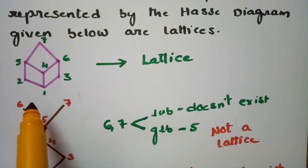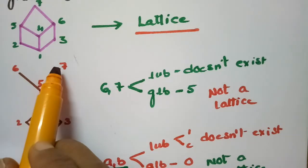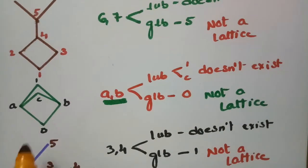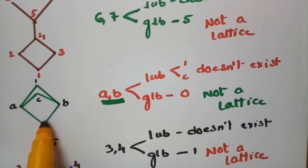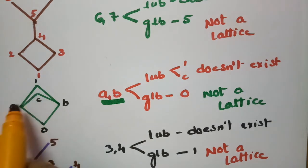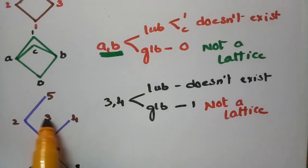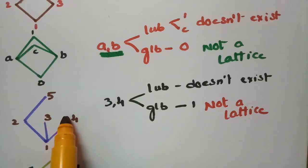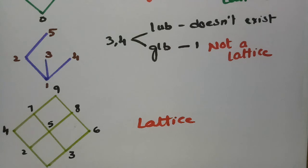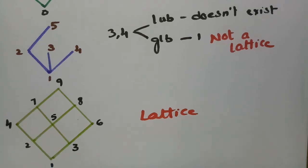Quick revision: In the first diagram, every pair of elements has a greatest lower bound and a least upper bound, so it is a lattice. In the second diagram, (6, 7) has a greatest lower bound but no least upper bound, so it is not a lattice. In the third diagram, (A, B) has a greatest lower bound but the least upper bound is not unique — it contains two elements C and 1 — so it is not a lattice. In the fourth diagram, (3, 4) has a greatest lower bound but no least upper bound, so it is not a lattice. In the fifth diagram, any two elements have both bounds, so it is a lattice.